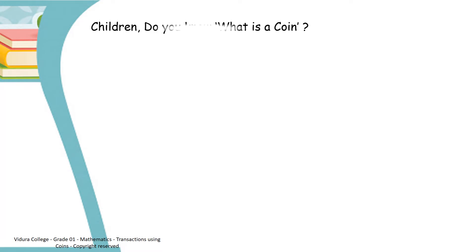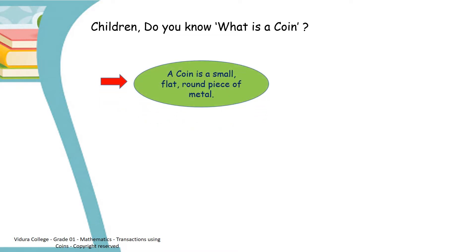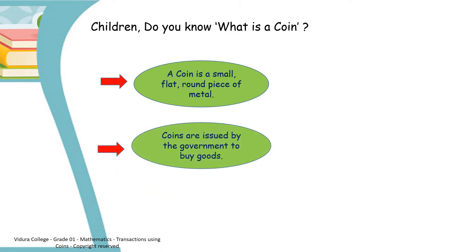Children, do you know what is a coin? A coin is a small, flat, round piece of metal. Coins are issued by the government to buy goods.